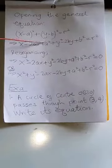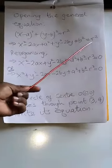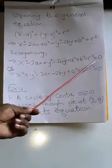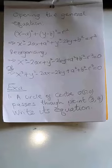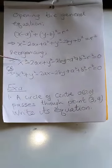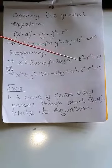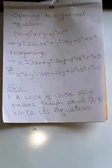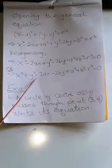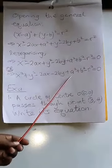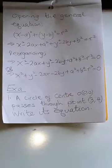Reorganizing by bringing r² to the left side, another way of writing the equation of a circle is: x² + y² - 2ax - 2by + a² + b² - r² = 0. You can rearrange the terms in any order, but this is the standard expanded form.